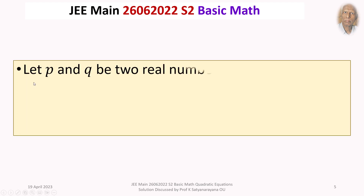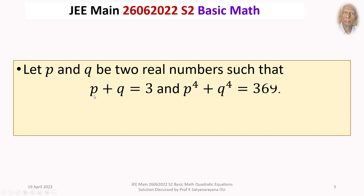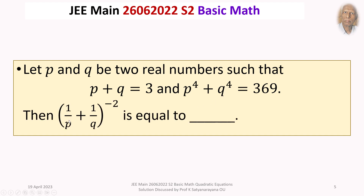The given question is: let P and Q be two real numbers such that P plus Q is equal to 3, and P to the power 4 plus Q to the power 4 is equal to 369. Then (1/P + 1/Q) to the power of minus 2 is equal to what?